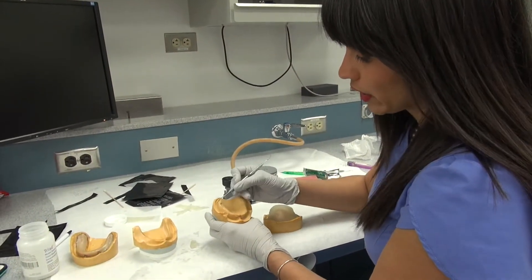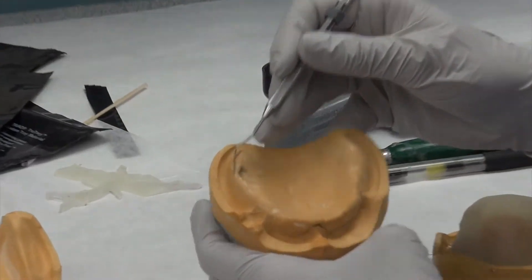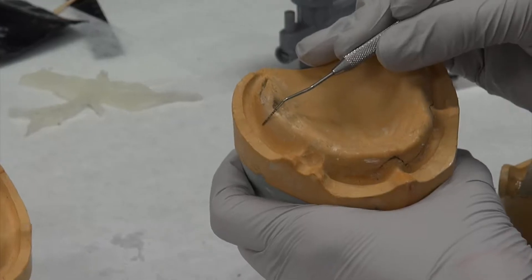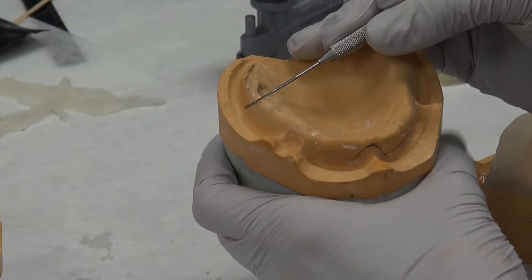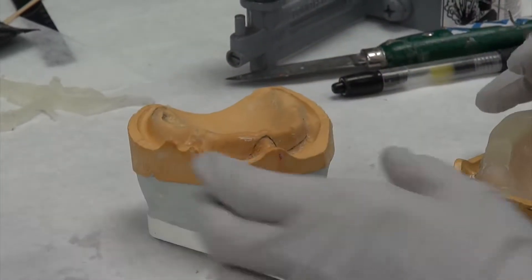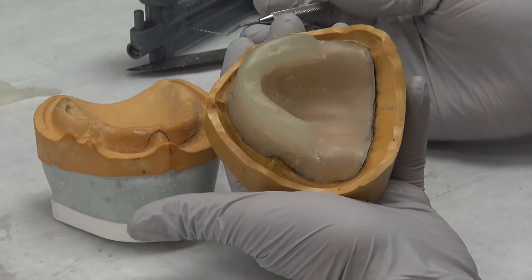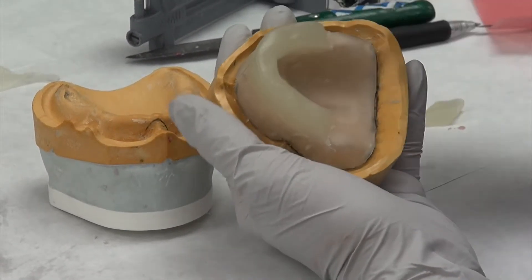Some key features: you want to mark on your cast or be able to understand where the ascending portion of your maxillary tuberosity is. Now that's going to be your limit for your posterior teeth.